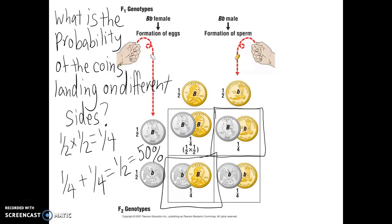Why would you use the actual mathematical rules instead of a Punnett square? In this example we can draw a Punnett square for two coins, but it would be impossible to draw the same type of Punnett square if we were flipping three coins. If we wanted to know the likelihood of flipping three coins and having all of them land on heads, the first coin has a 50% chance, the second coin has a 50% chance, and the third coin has a 50% chance — so altogether that's one in eight. The probability of all three coins landing on heads is one-eighth.